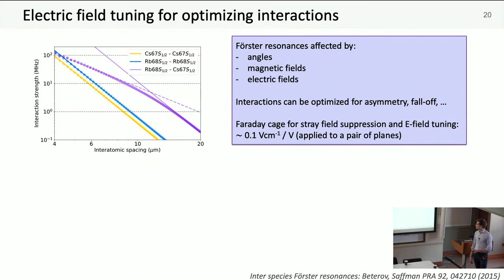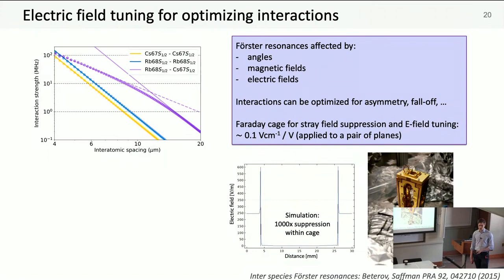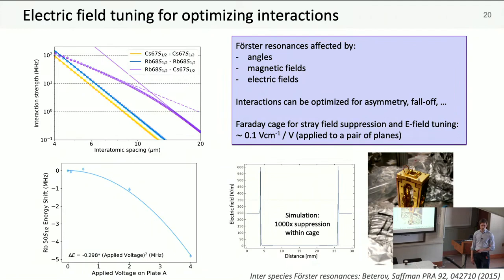One thing unique about our experiment is we built a Faraday cage into it that serves two purposes. First, it suppresses stray fields from outside the experiment. Second, we can use it to apply deliberate electric fields. Here you can see some COMSOL simulations showing about a thousand fold suppression of external fields inside the cage. Here you see a photo of the cage before it went into the glass cell. Spoiler alert: we have Rydberg excitation, and we were able to show we can Stark tune our Rydberg levels.